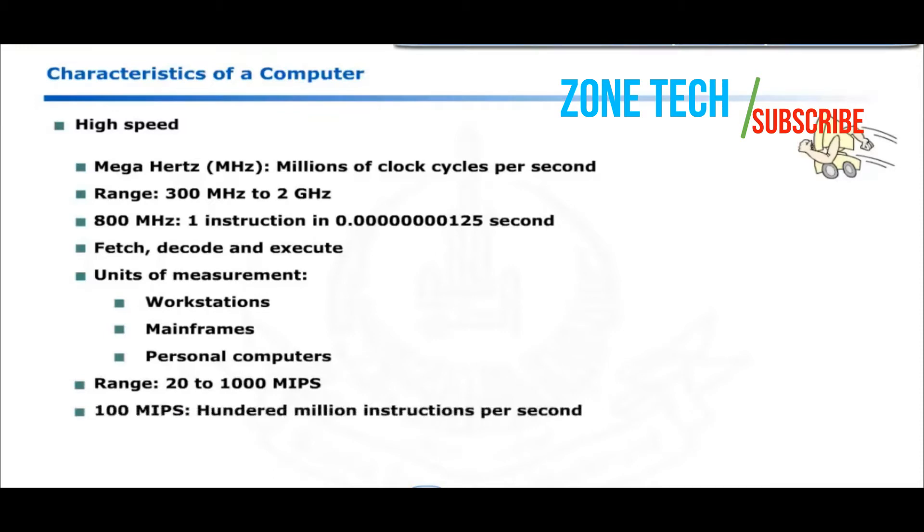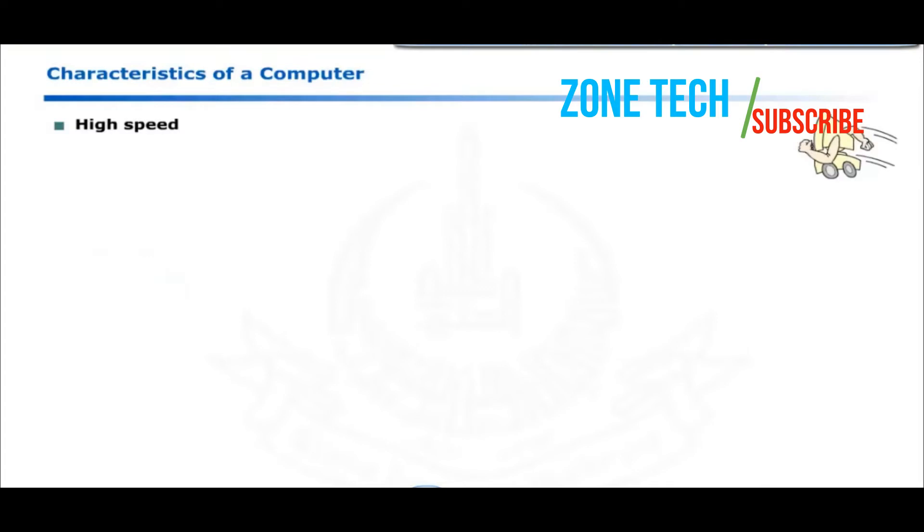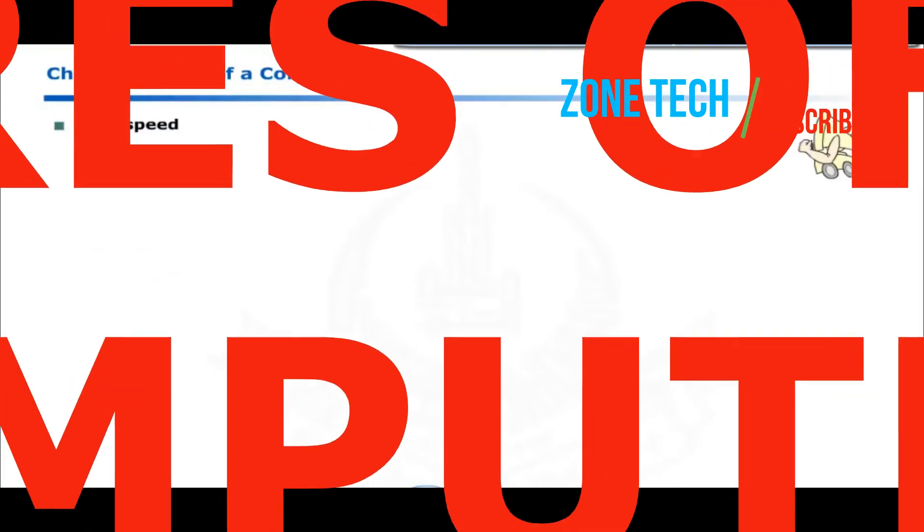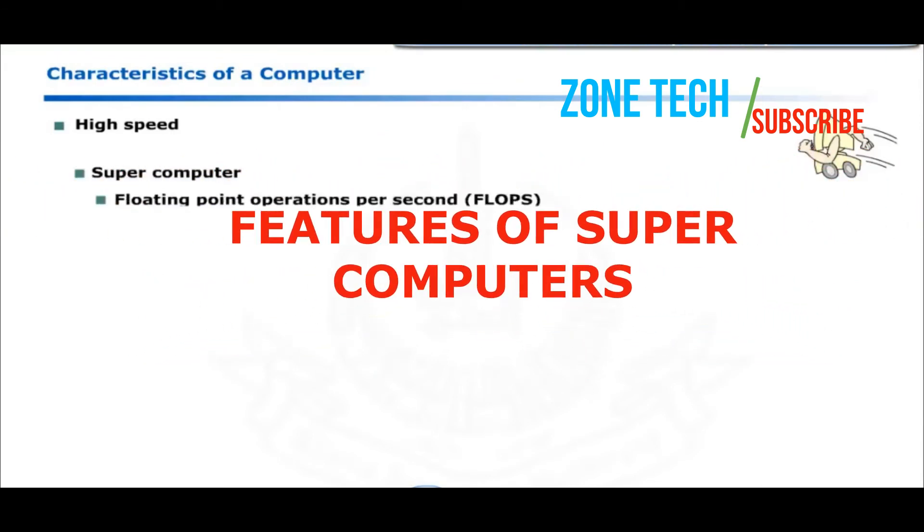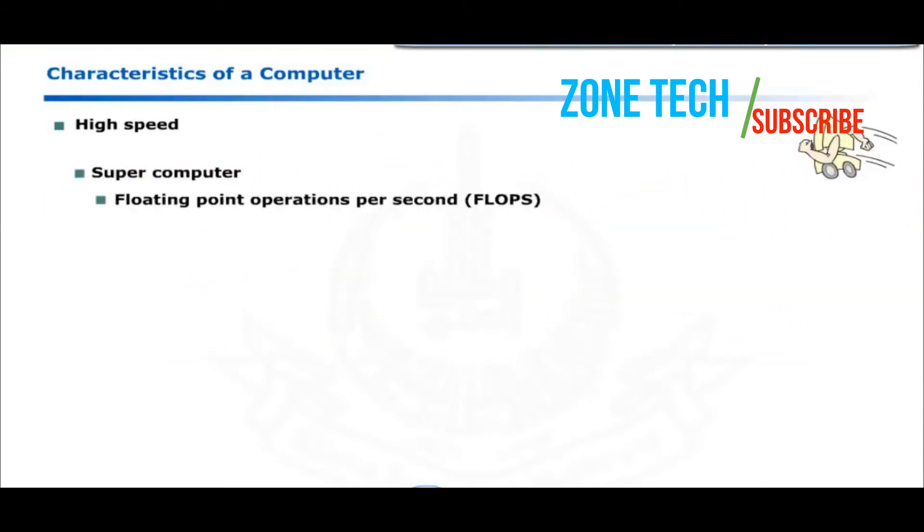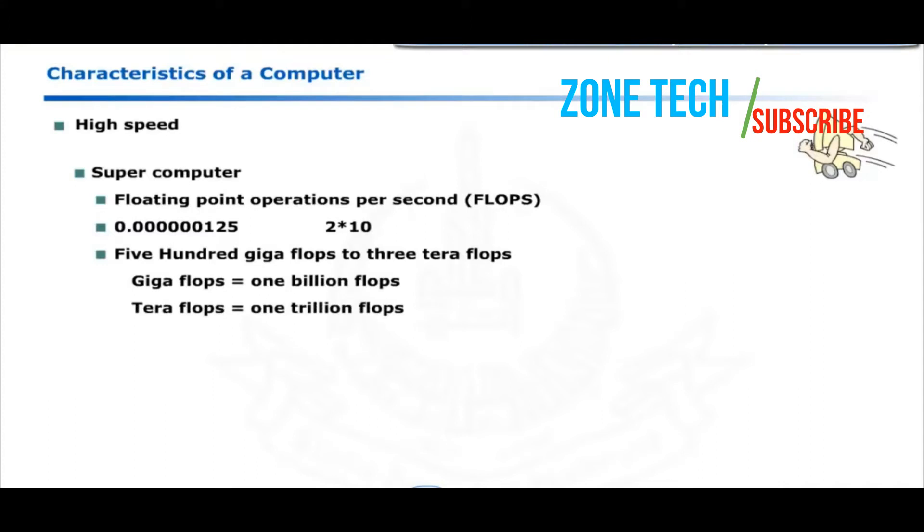A 100 MIPS computer can execute 100 million instructions per second. The speed of supercomputer is measured in terms of floating point operations per second. Supercomputers operate at a speed of 500 gigaflops to 3 teraflops. A gigaflop is 1 billion flops and a teraflop is equal to 1 trillion flops.